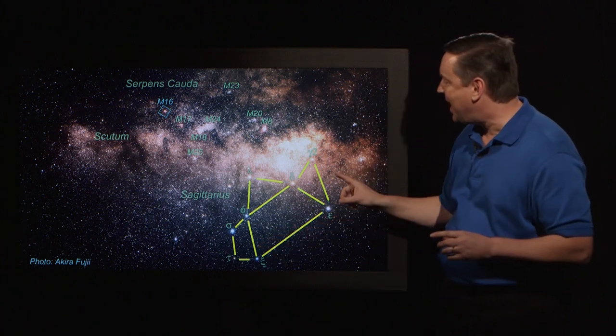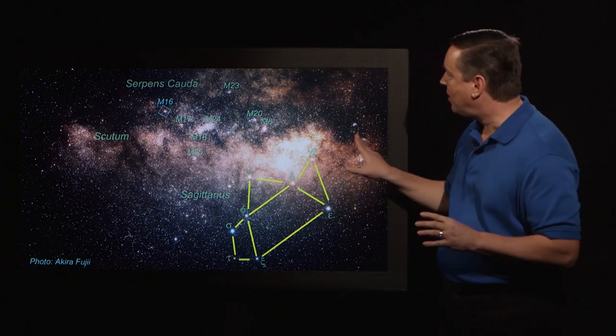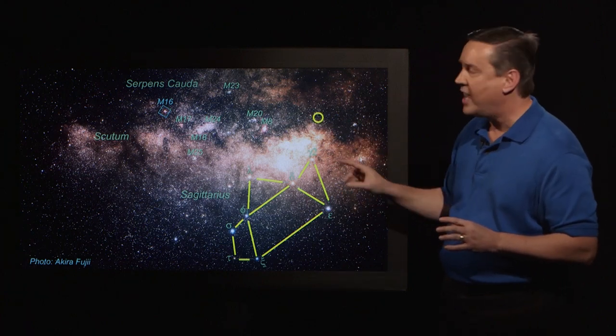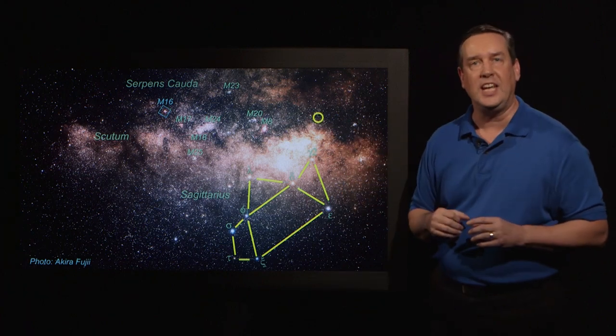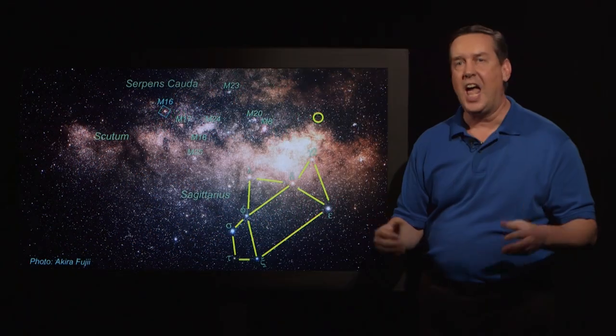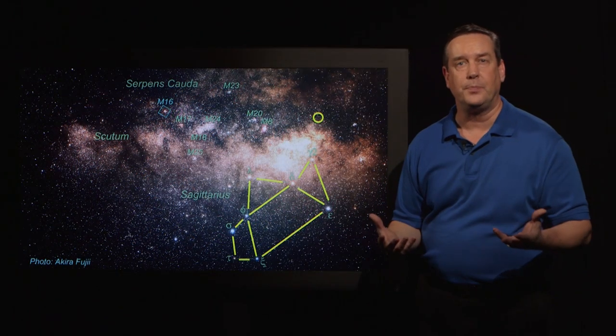Now that spout points toward the center of our galaxy, which is located approximately here. So when we view the constellation of Sagittarius, we're looking toward the center of our galaxy, and we have a very rich field.